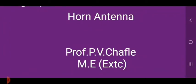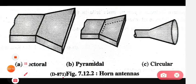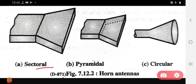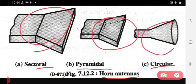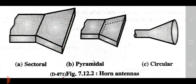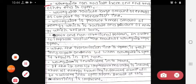Hello students, today we see the topic that is horn antenna. There are three types of horn antennas: sectoral, pyramidal, and circular horn antenna. This is the diagram for sectoral, then pyramidal, and circular.